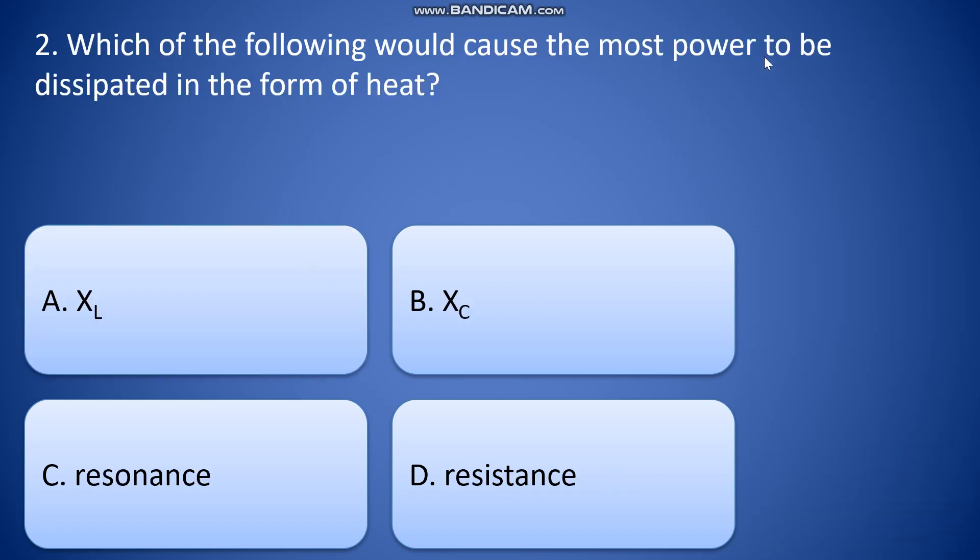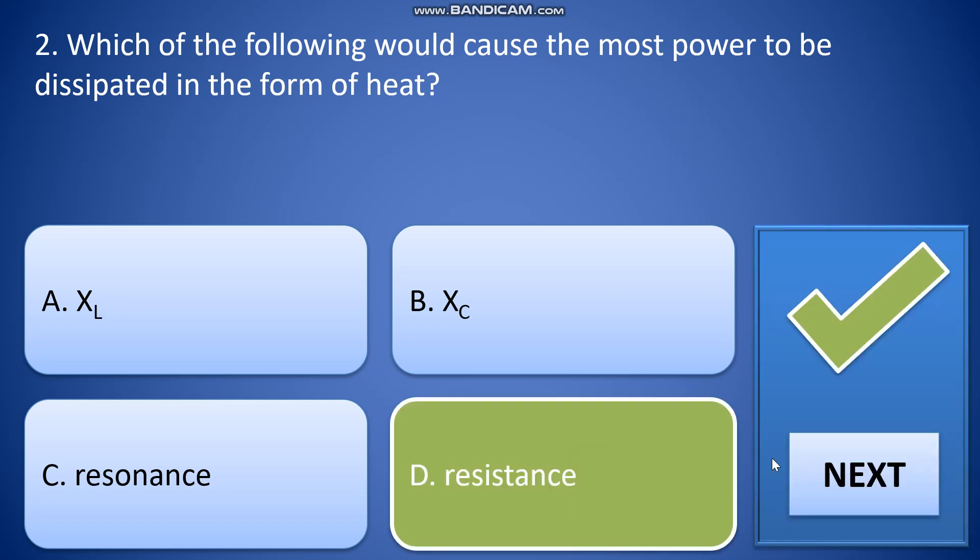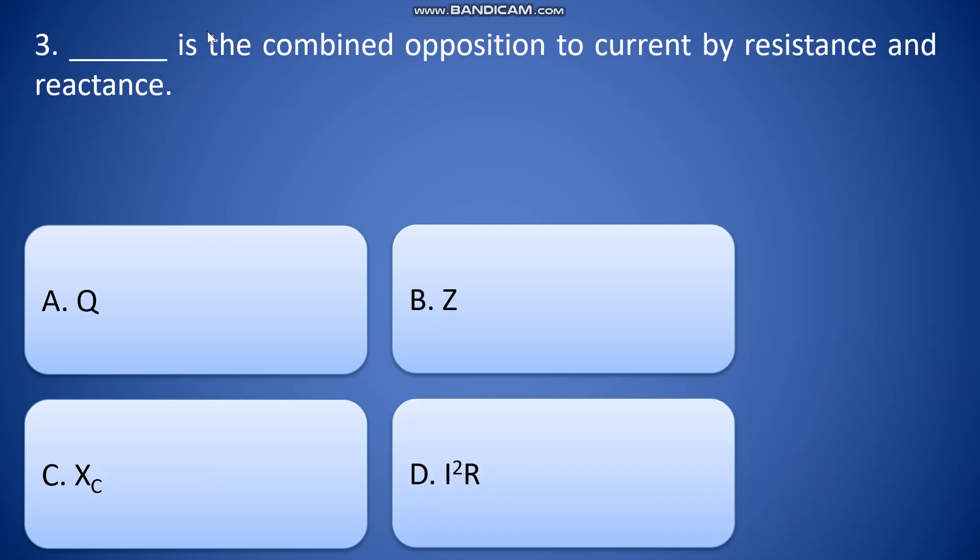Which of the following would cause the most power to be dissipated in the form of heat? A: XL, B: XC, C: resonance, D: resistance. So letter D, resistance.